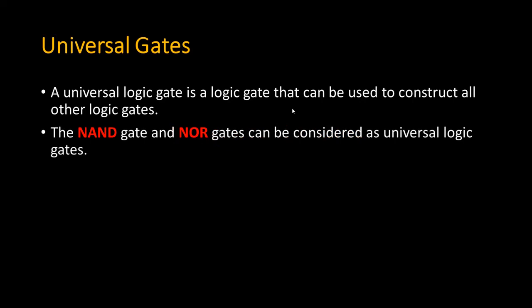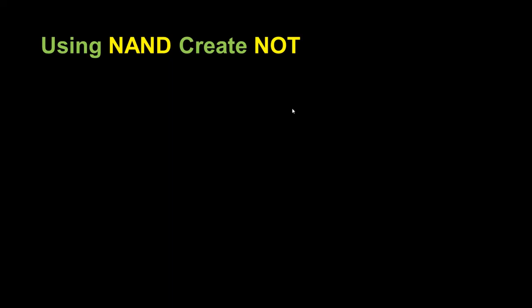Basically, using a universal gate you can create all the other basic gates. Using NAND and NOR gates you can create any other gates, therefore NAND and NOR gates are considered universal gates.